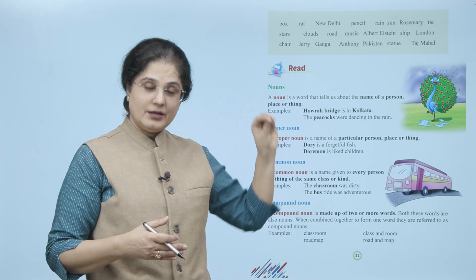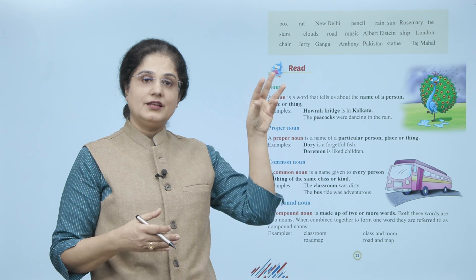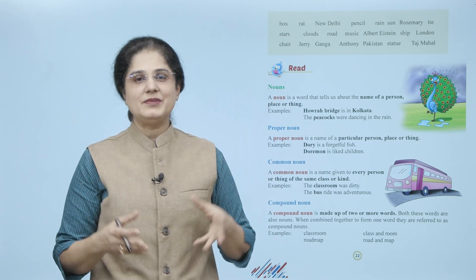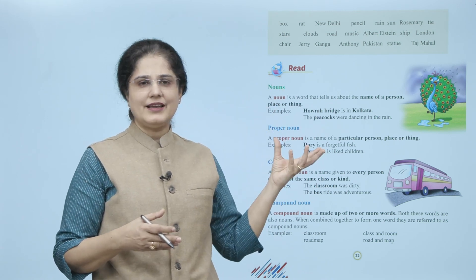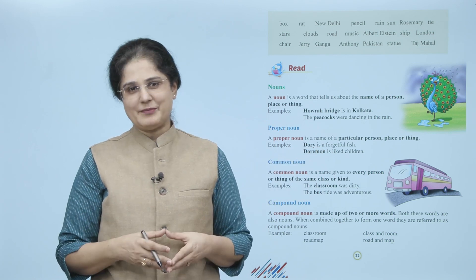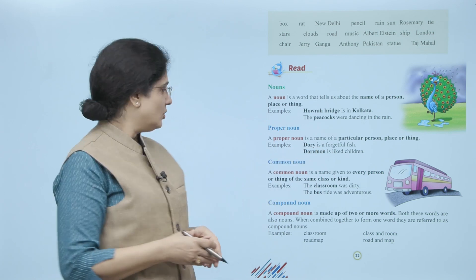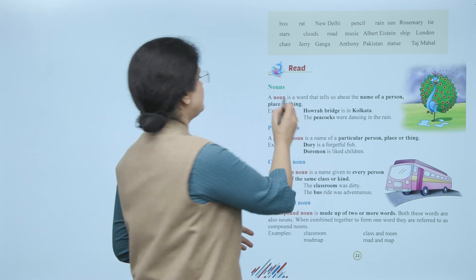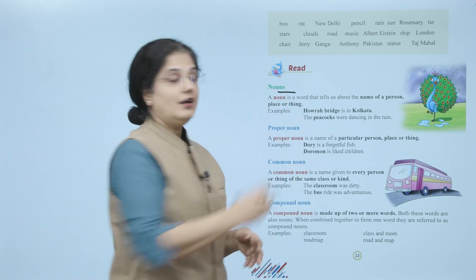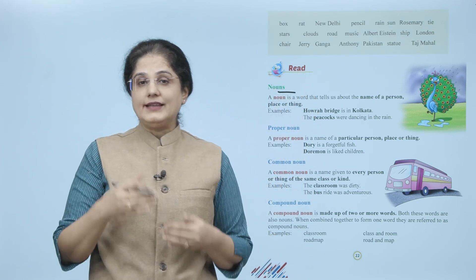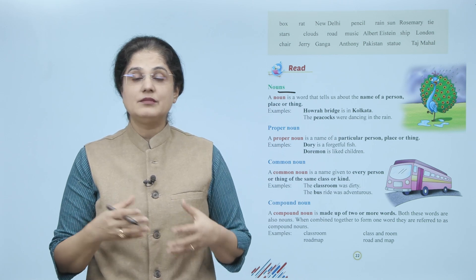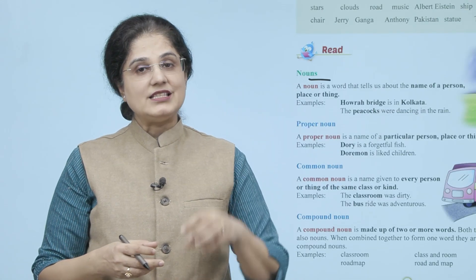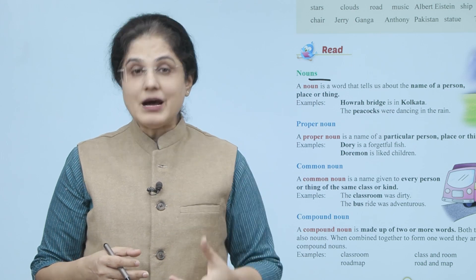Aap Name of Person, Name of Place, Name of Thing ke columns mein likhenge. Jaisi box kahaan aayega — Name of Thing mein. So let's read this now. Nouns — a noun is a word that tells us about the name of a person, place or thing. To jo words hume kisi bhi person, place ya thing ka naam batate hain, wo kya hain — noun.